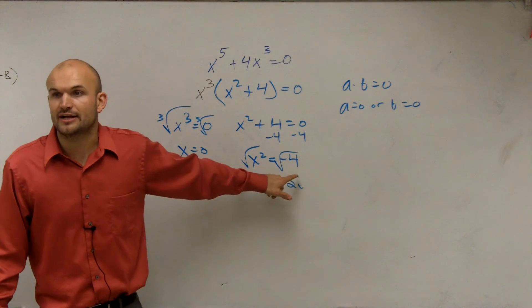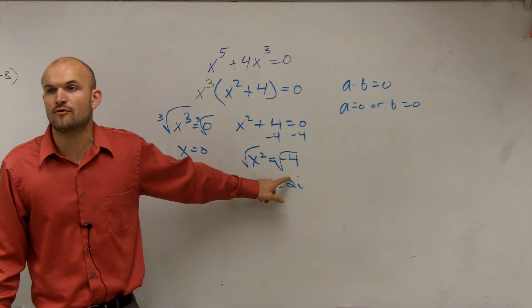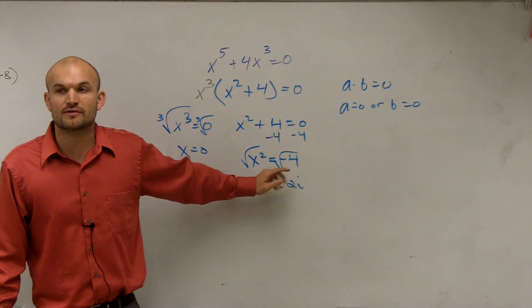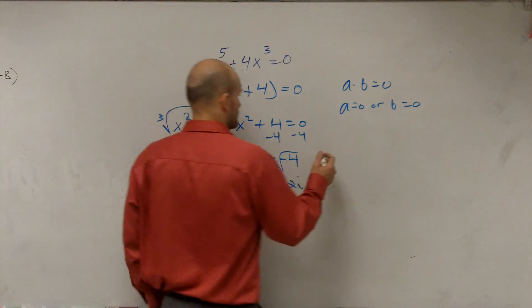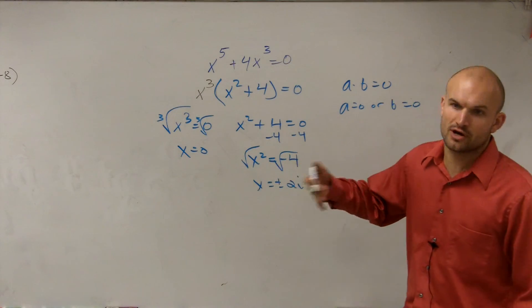It's 2i, though, because it's a negative 4. You're taking the square root of negative 4. Remember, that square root of a negative number, you're going to have an imaginary component, right? Right? Because you have to do square root of negative 1, which would be i.